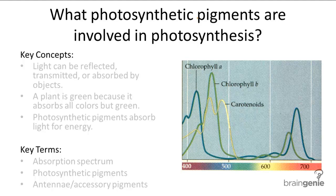When this multicolored sunlight shines onto the Earth, objects can do three things with it. They can either reflect the light, transmit the light, or absorb the light. So clear objects would transmit the light, like a piece of glass — the light just shines through it without affecting the glass.